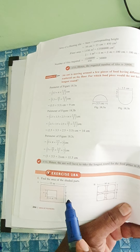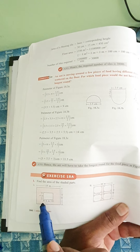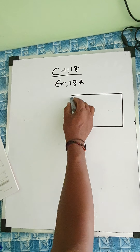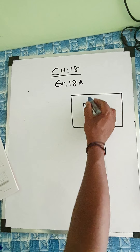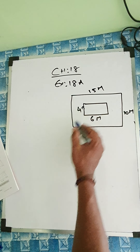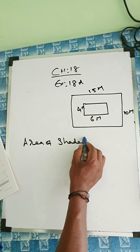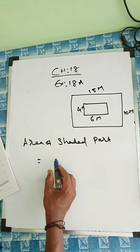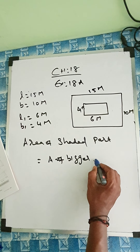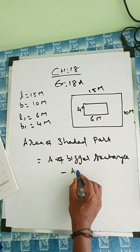Here there is a length and breadth, so it's a rectangle, and inside there is another smaller rectangle. We'll find the area of the whole rectangle and subtract the small one to get the shaded inside portion. The big rectangle has L equals 15 meters and B equals 10 meters. The small rectangle has L1 equals 6 meters and B1 equals 4 meters. So area of shaded part equals area of bigger rectangle minus area of smaller rectangle, which is L into B minus L1 into B1.